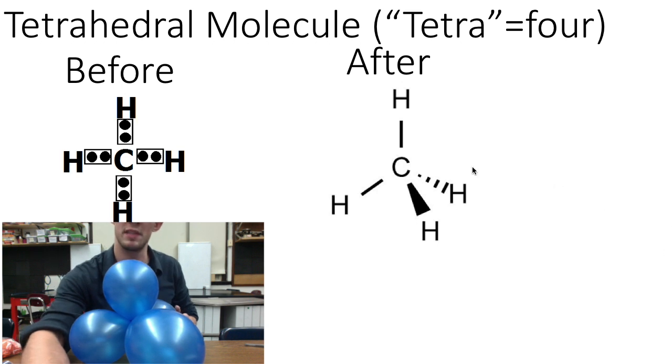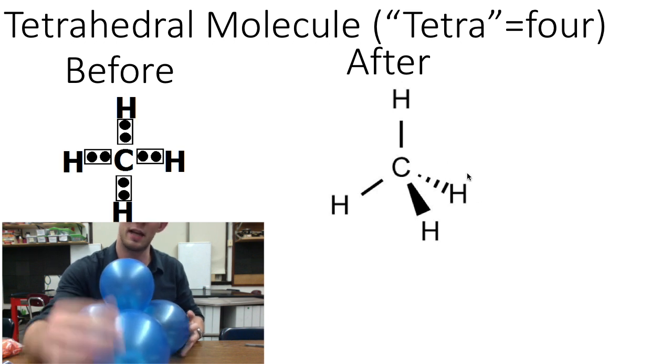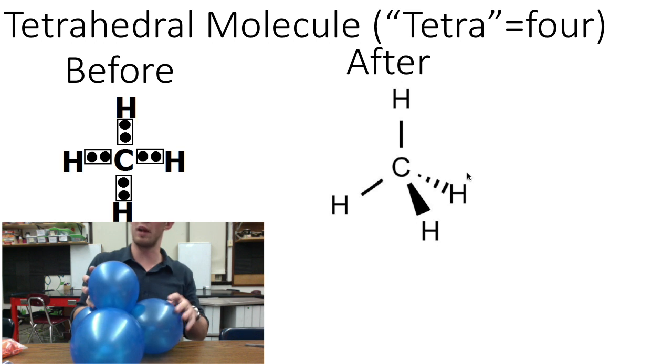And you can see that these molecules form this tetrahedral shape, which again we represent using this triangle to show the element that is coming toward us, and using this dashed line to show the element that is coming back and away from us.